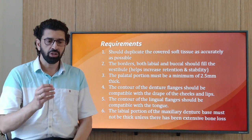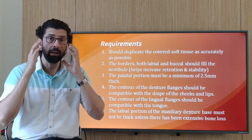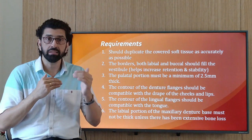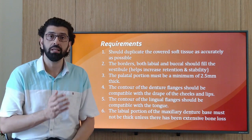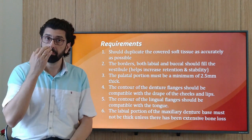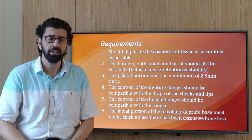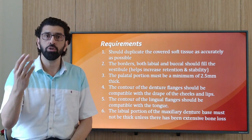The fourth point is that the contour of the denture flange should be compatible with the drape of the cheek and tongue in the mandibular — it cannot be bulky or bulging outward, nor bulging towards the tongue, as that will irritate the tongue, causing it to push the denture out and making it highly unstable. The fifth point is that the labial portion of the maxillary denture needs to be minimally thick. Unless the patient has lost bone due to trauma, surgical excision, or any reason requiring bulk for lip support, making it too thick will make it protrusive and unaesthetic.